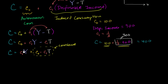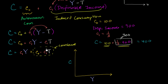So when we plot this, if there's no aggregate income, consumption equals C0 minus C1 times T — that's the vertical intercept. As aggregate income increases, C1 times aggregate income contributes the induced consumption. The slope of the line is the marginal propensity to consume, C1.